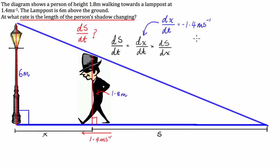And so the ratio of the shadow with respect to the person's height is going to be the same as the shadow plus the distance to the lamp post over the height of the lamp post.